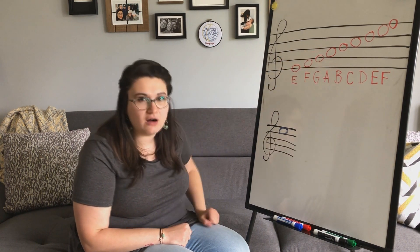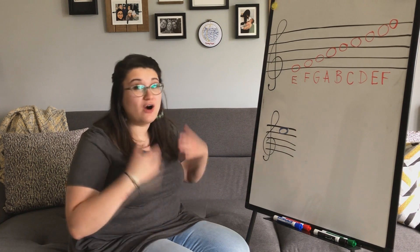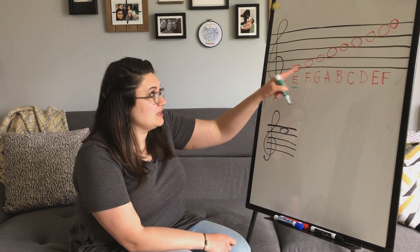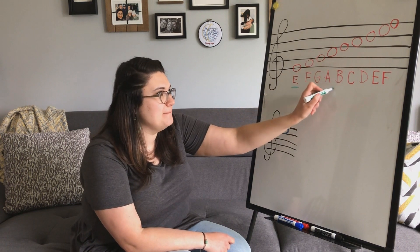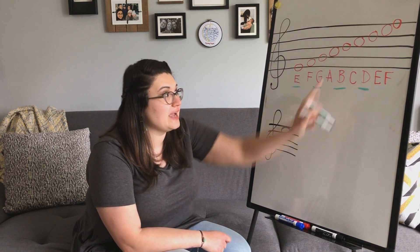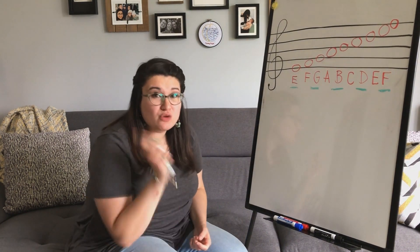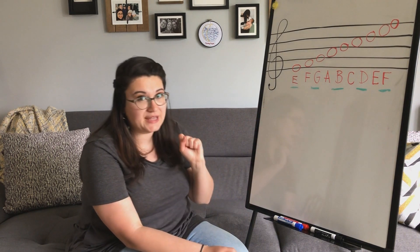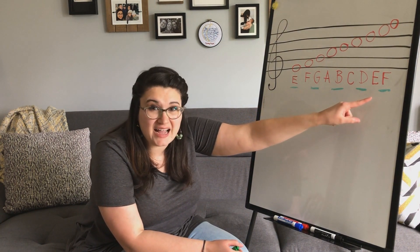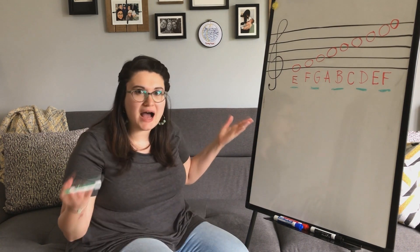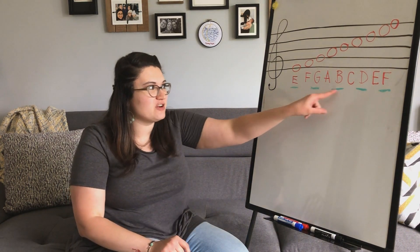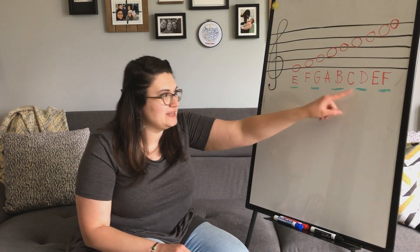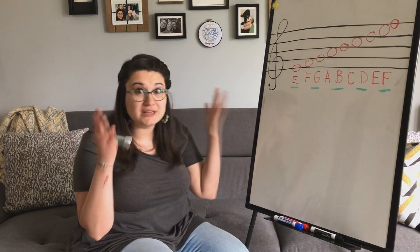One group is going to be all the notes that are on the line, and one group is going to be all the notes that are in the spaces. Here's all of our lines: E on a line, G on a line, B on a line, D on a line, and F on a line. To remember those notes that are on the lines, in order E, G, B, D, F, we can think: Every Good Boy Does Fine on the line. It rhymes with the word line, so that we remember these are the letters that belong on the lines.